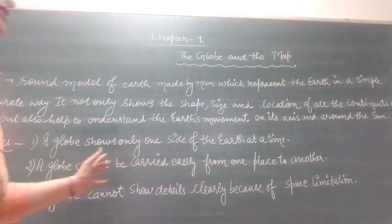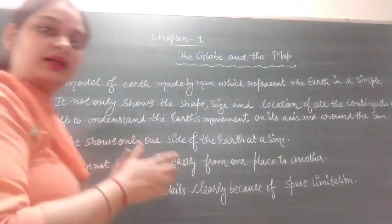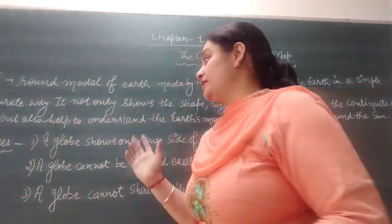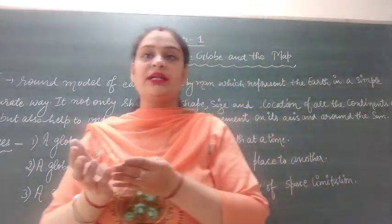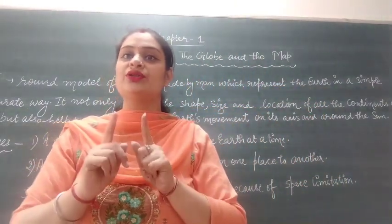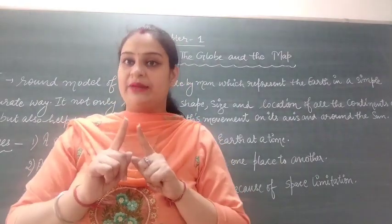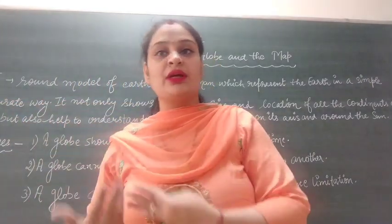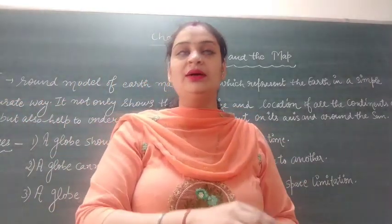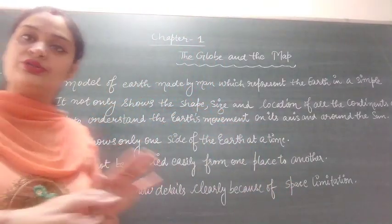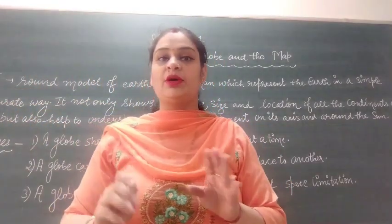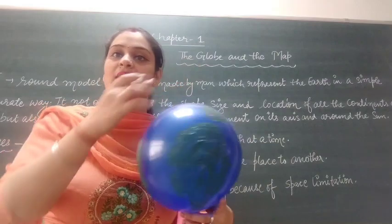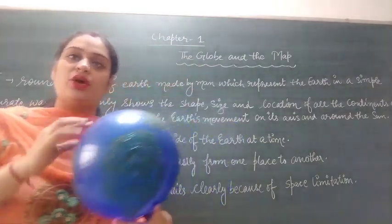So, to summarize: the globe is mainly a model which represents the Earth, and with its help we can learn different things about the Earth. But it has limitations — it cannot show all parts of the Earth at the same time, it is difficult to carry from one place to another, and it cannot show all details clearly due to space limitations on the globe.